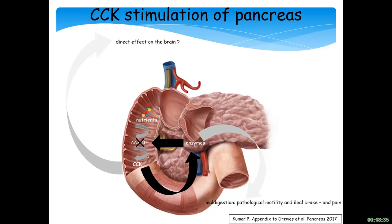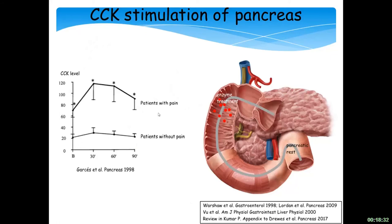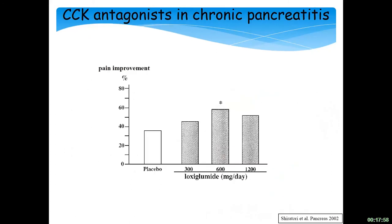We have seen that patients with pain have much higher levels of CCK compared to patients without pain. The treatment is to give them enzymes, or for example pass a tube into the jejunum to bypass the whole pancreas and CCK secretion. Most of these treatment series are based on very few patients, but in some cases they are really effective. There has also been an approach to use CCK antagonists, which have been effective compared to placebo, but the effect has not been sufficient to reach the market.